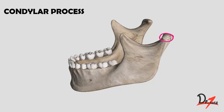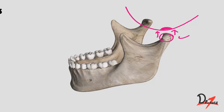The condylar process is an expanded projection from the posterior superior aspect of the ramus. It has a head which articulates with the mandibular fossa of the temporal bone, forming the temporomandibular joint.